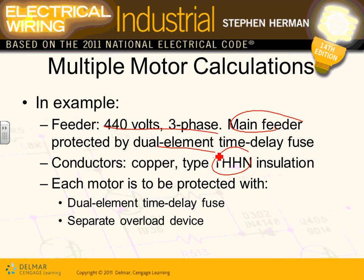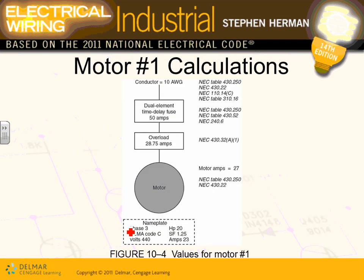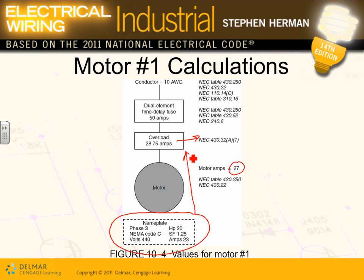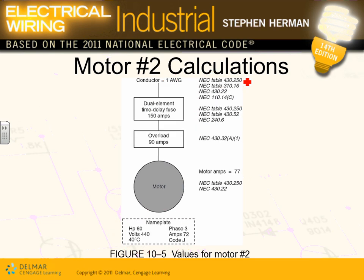Each motor is to be protected with dual element time delay fuses and overload devices, and you calculate the feeder for them all. From the motor full load amp, you find the overload size based on equipment data, then size the fuses from the NEC tables, and determine conductor sizes. You've done this with your instructor and will continue doing more.